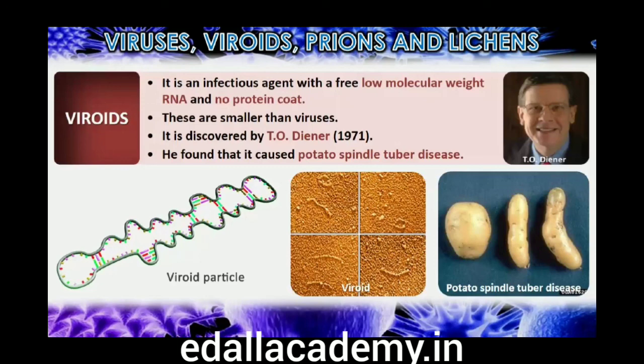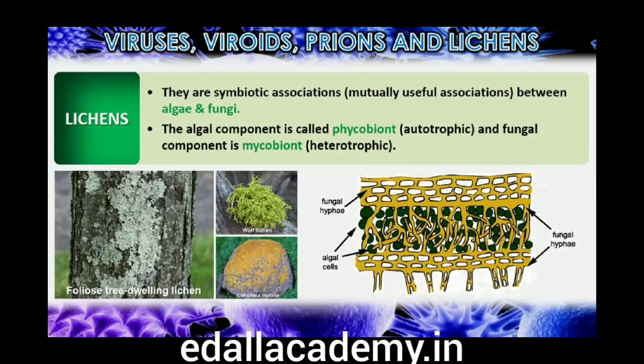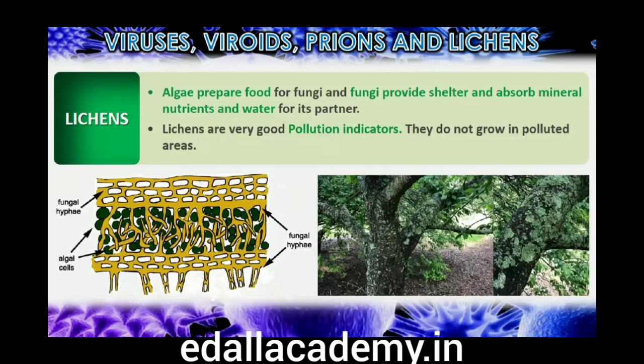Lichens are symbiotic associations — that is, mutually useful associations — between algae and fungi. The algal component is known as phycobiont and the fungal component is mycobiont, which are autotrophic and heterotrophic respectively. Algae prepare food for fungi and fungi provide shelter and absorb mineral nutrients and water for their partner. So close is their association that if one saw a lichen in nature, one would never imagine that they had two different organisms within them. Lichens are very good pollution indicators — they do not grow in polluted areas.